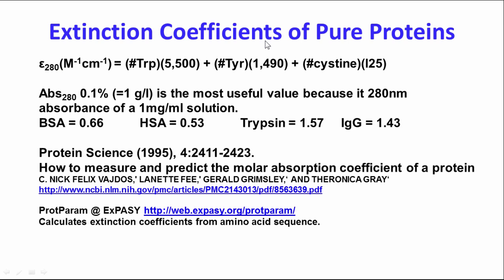To accurately measure the concentration of a pure protein, you want to know the extinction coefficient, which is based on the amount of tryptophan, tyrosine, and cysteine in the protein — a formula empirically determined. We measure the absorbance of a 0.1% solution — that's 1 mg/mL — at 280 nm. For example: BSA has an extinction coefficient of 0.66, HSA is 0.53, trypsin is 1.57, and IgG immunoglobulin G is 1.43.